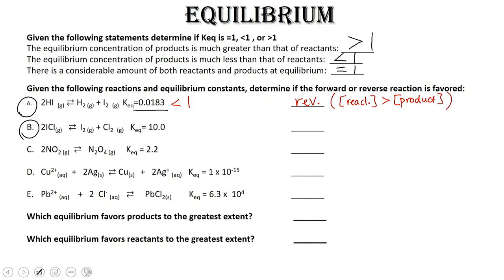All right, B. We have iodine chloride forming iodine and chlorine gas. Our K equilibrium is 10, which is greater than 1.